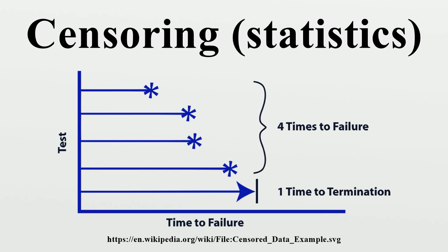Special techniques may be used to handle censored data. Tests with specific failure times are coded as actual failures. Censored data are coded for the type of censoring and the known interval or limit. Special software programs can conduct a maximum likelihood estimation for summary statistics, confidence intervals, etc.